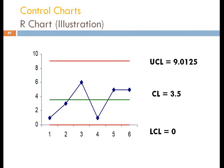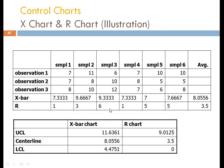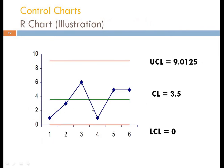Similarly, for the R chart: the UCL is plotted at 9.0125, the central line at 3.5, and the LCL at 0. The R values — 1, 3, 6, 1, 5, 5 — are plotted as blue dots. All values lie within the lower and upper control limits, confirming that the entire process is under control.